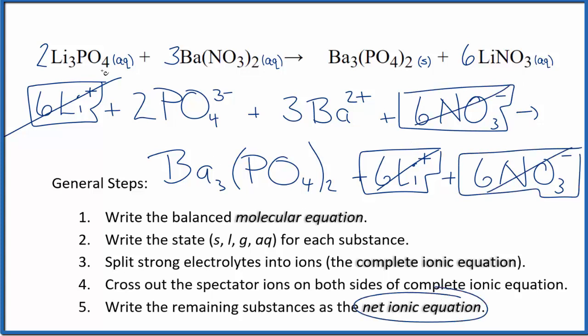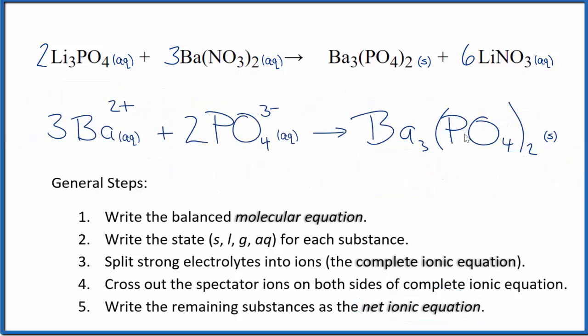What's left, that's the net ionic equation for lithium phosphate plus barium nitrate. I'll clean it up and write the states. We'll have our net ionic equation. So this is the balanced net ionic equation for Li3PO4 plus Ba(NO3)2, the lithium phosphate and barium nitrate.